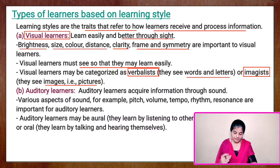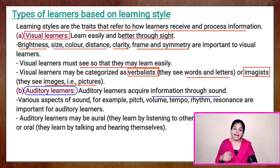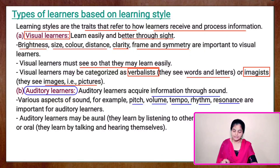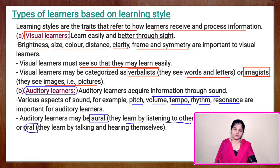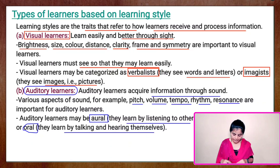The second type of learners based on learning style is auditory learners. This type of learner receives and acquires information with the help of sound. Various aspects of sound play an important role here — for example, the pitch of sound, volume, tempo, rhythm, and resonance are all factors that affect their learning style. Among auditory learners, we have two categories: aural and oral. Aural means they learn by listening to others, whereas oral means they learn by talking and hearing themselves.